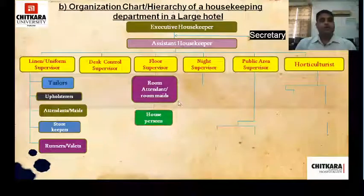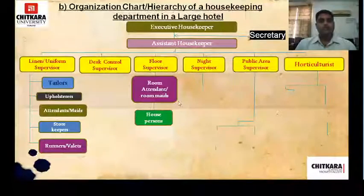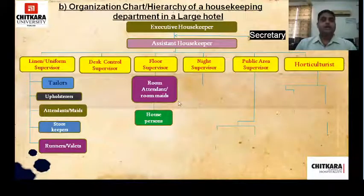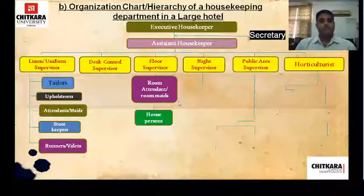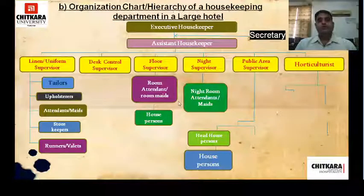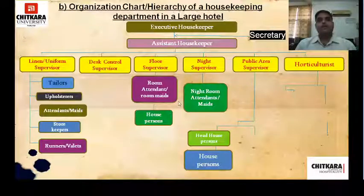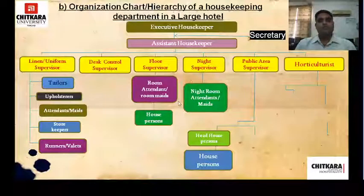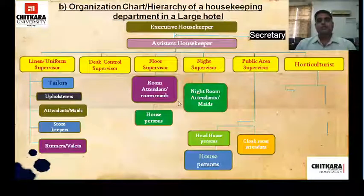Under the control desk supervisor there is no person reporting. Under the floor supervisor you have room attendants and house persons — room attendants clean the guest rooms so they are ready for sale again. Under the night supervisor you have night room attendants whose job is the same as regular room attendants. Under the public area supervisor there is a head house person and house persons; public areas include the bar, restaurant, coffee shop, and banquets. The second role under the public area supervisor is the cloakroom attendant.